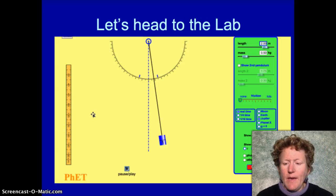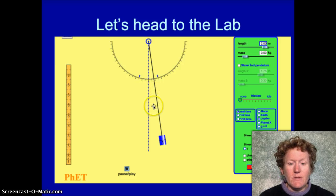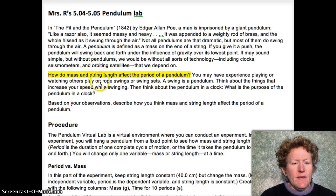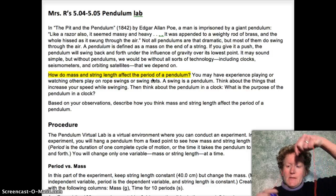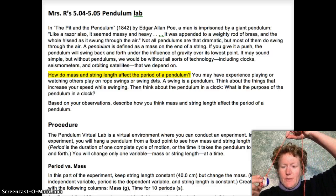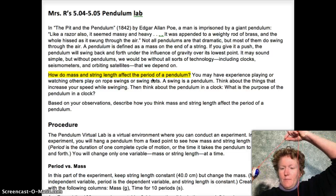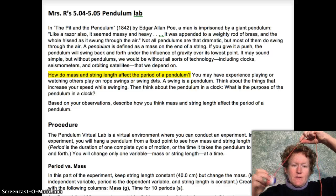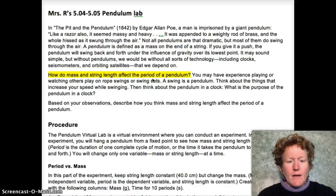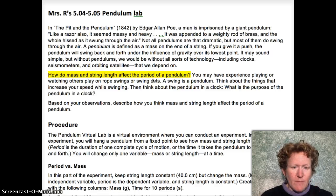Let's head to the lab and look at the Lab 5.04 sheet. We'll use this simulation to explore pendulums. The main question we're trying to answer is: how do mass and string length affect the period of a pendulum? The period is how long it takes to make one complete trip back to where it started — swinging out and swinging back.